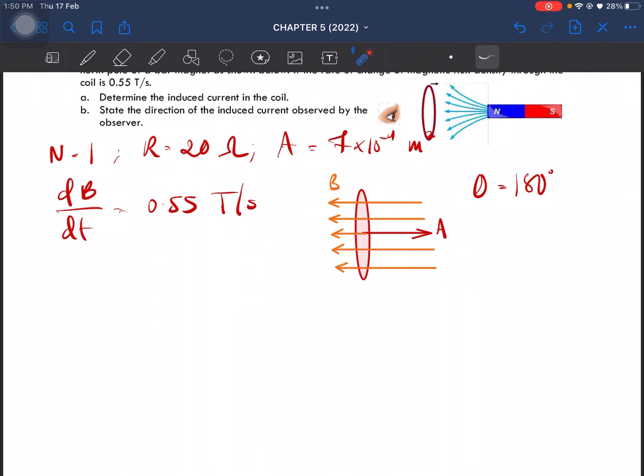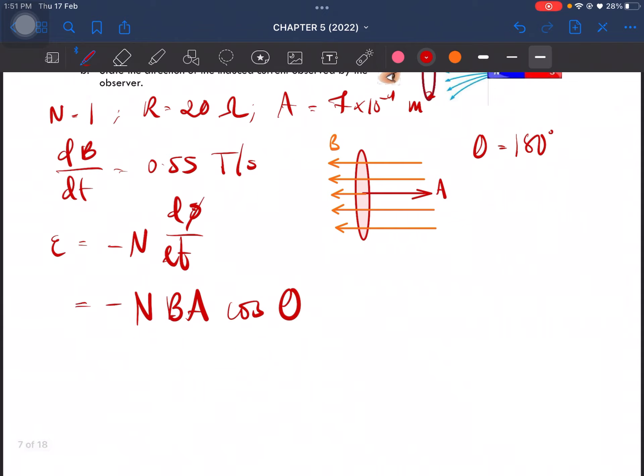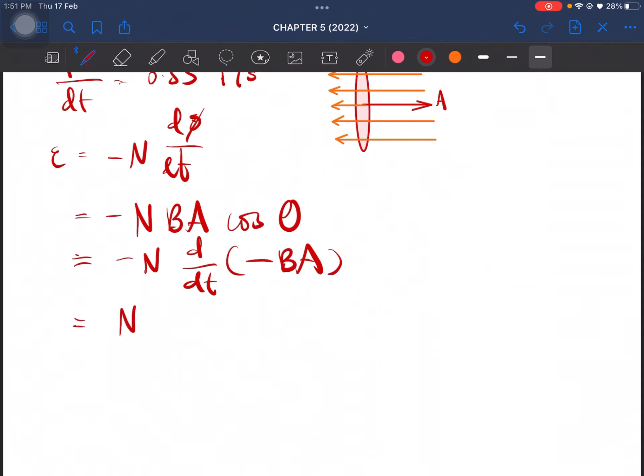What we need to do to find induced current is to calculate the induced EMF. Remember induced EMF is equal to negative N, d phi over dt, where this is equal to BA cos theta. This will give us negative N, d over dt of BA. Cos 180 degree is negative, so we get N A dB over dt.